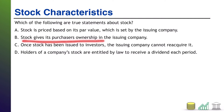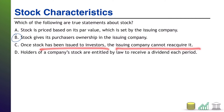How about B? Stock gives its purchasers ownership in the issuing company. That is exactly what stock is, and that is what makes stock different from, say, giving the company a loan. Stock entitles you to ownership. How about C? Once stock has been issued to investors, the issuing company cannot reacquire it. That is not true. The company can reacquire it, and that is when the stock becomes known as treasury stock — it has been repurchased by the company and is held in the company's treasury.